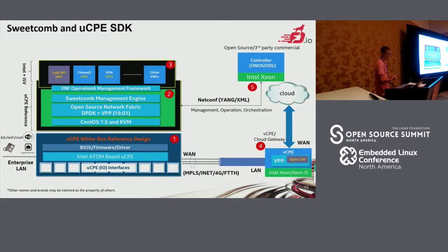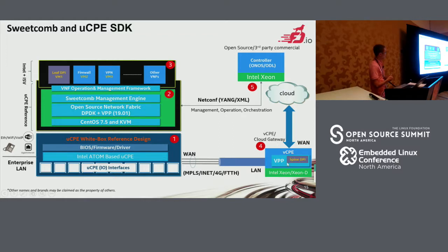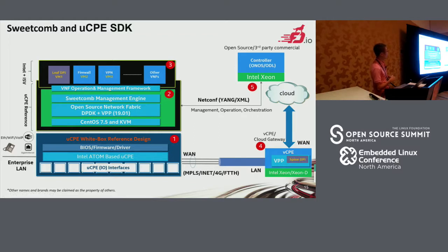It has supported Ethernet, Wi-Fi, and voice. The second part is the uCPE reference solution — it runs on CentOS and KVM. On the data plane, it has supported DPDK and VPP 19.01 release. And here is the Sweetcom management agent. On the third piece, it can run different VNFs. On the fourth piece, it's the virtual CPE acting as a cloud gateway. In the uCPE SDK and vCPE, it can run DPI. For the last part, it's the SDN controller — we can support OpenDaylight or ONOS. The SDN controller can configure VPP through netconf and YANG models.